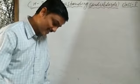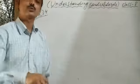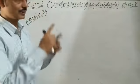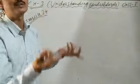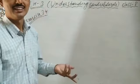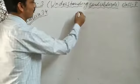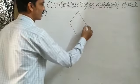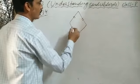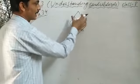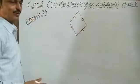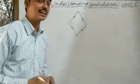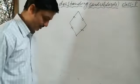All rhombuses are kites? Yes — true. Because in a rhombus, all four sides are equal, so the consecutive sides are equal. If I have a rhombus, it has four equal sides, so the consecutive sides are equal. Therefore, all rhombuses are kites, but all kites are not rhombuses.